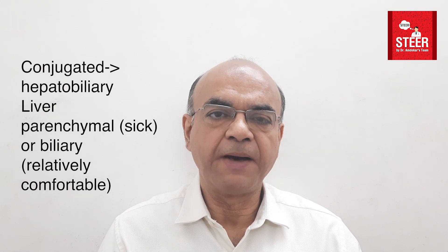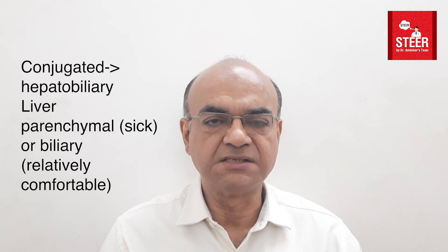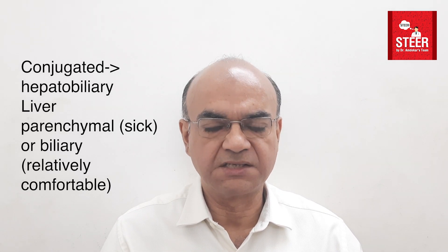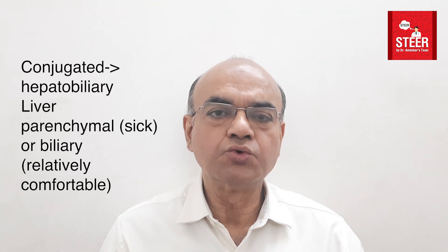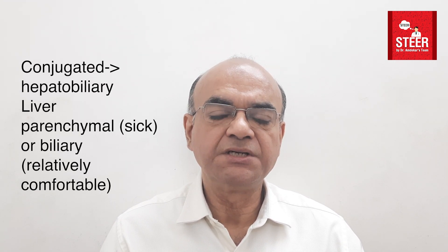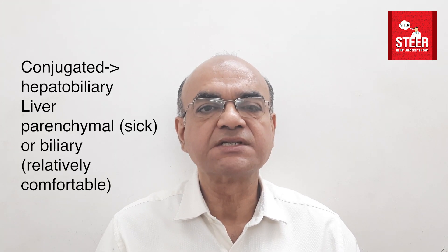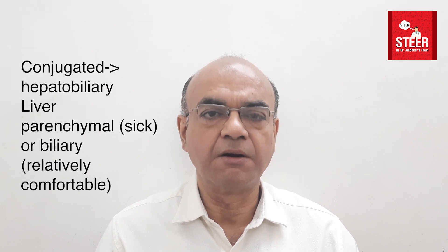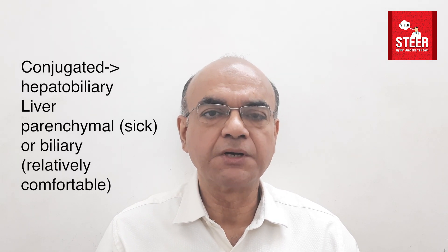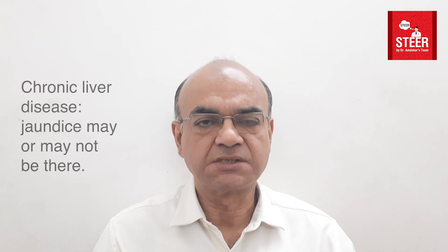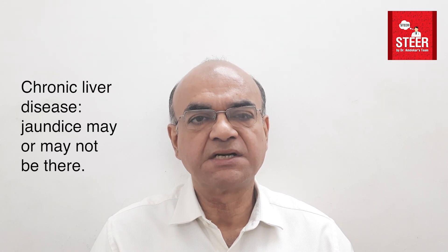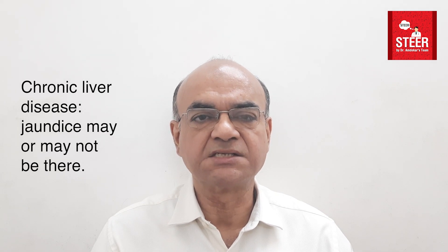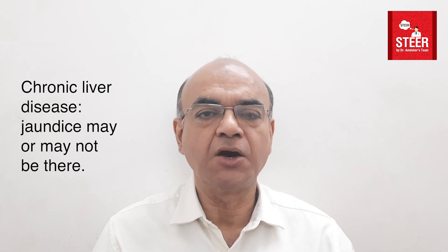Jaundice can be due to liver parenchymal disease or biliary tract disease, but not the other two parts. In acute liver parenchymal disease, the patient looks sick, whereas a patient with biliary tract disease looks relatively comfortable even with deeper jaundice. Chronic liver disease may present with growth failure, edema, ascites, portal hypertension, and jaundice may or may not be present.